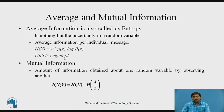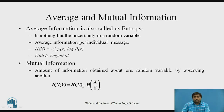Mutual information is the amount of information obtained from one event with respect to observing another event. We consider two events xj and yk, but unlike independent events, here one event is observed with respect to the other. Mutual information I(x; y) equals H(x) minus H(x|y), where H(x) is the initial entropy and H(x|y) is the conditional entropy. The difference gives the amount of information obtained from one event by observing the other.